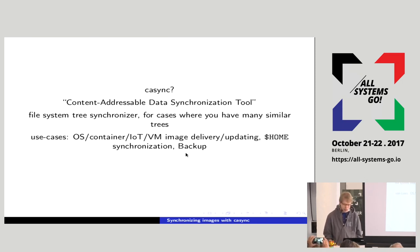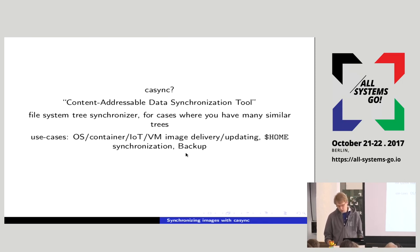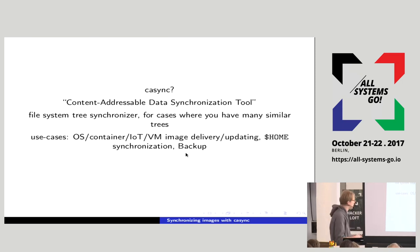The use cases are: if you want to update your OS, your containers, your IoT devices, your VM images. It's about delivering the initial image as well as doing updates. Other related use cases include synchronizing your home directory or doing backups. The big difference is that in the first use case — delivering images to clients — it's about downloading something from the internet and installing locally, whereas in the home sync/backup case, you push from the individual device into the cloud.